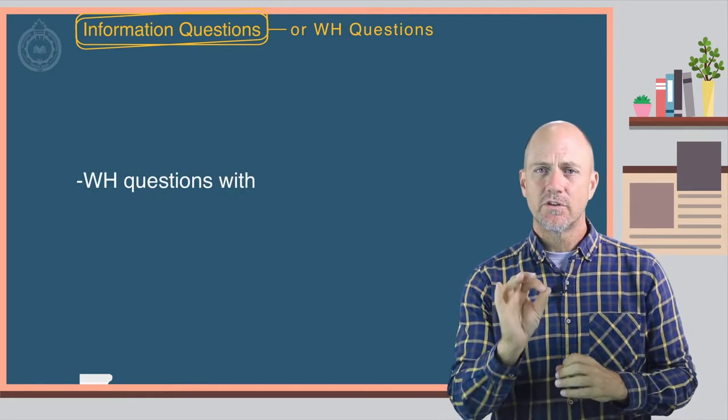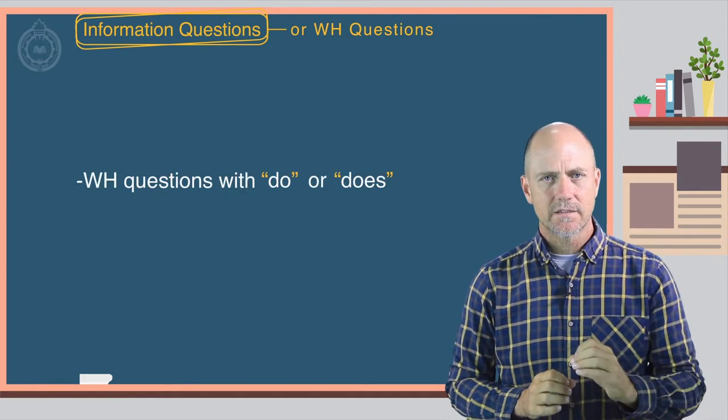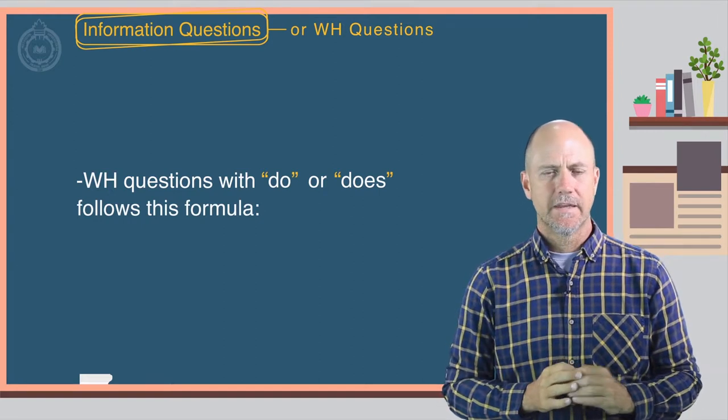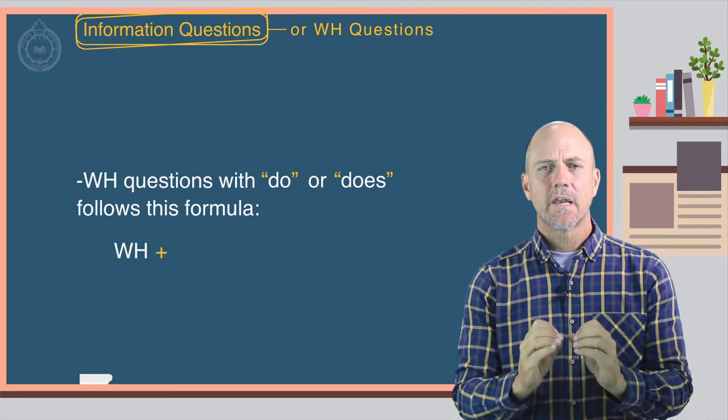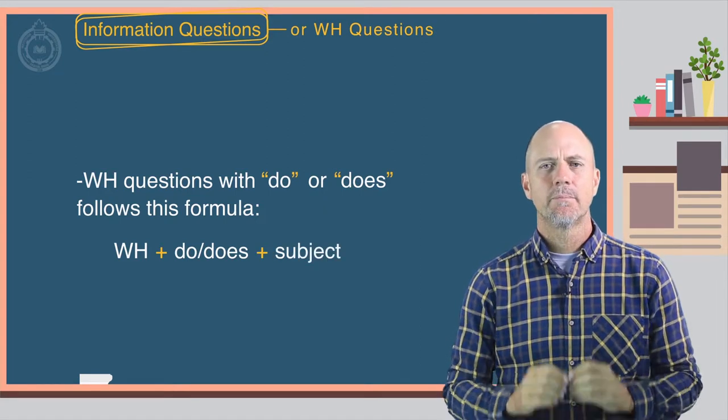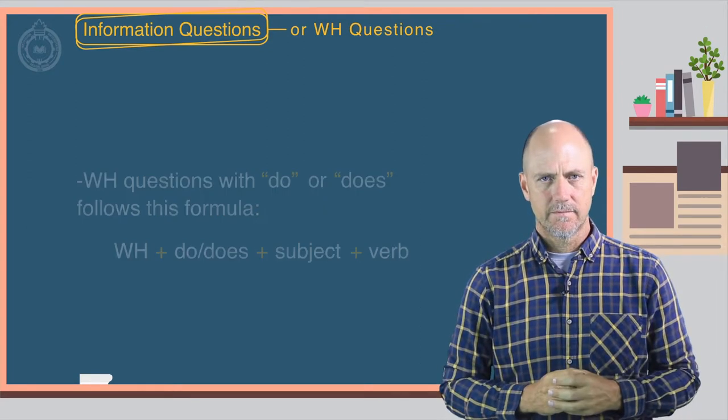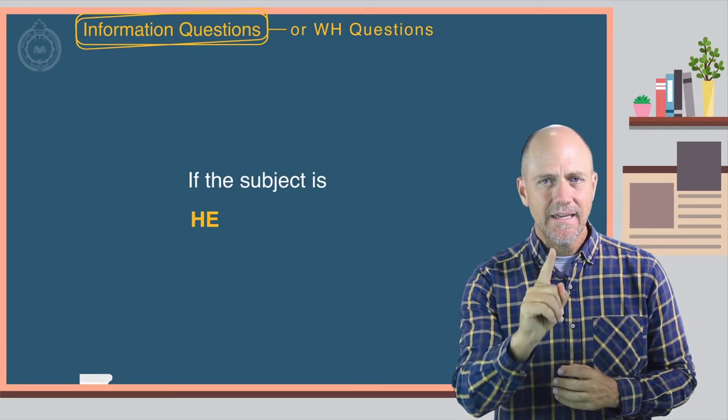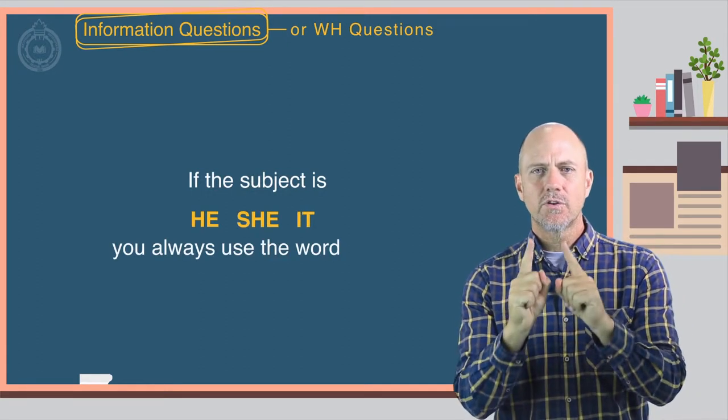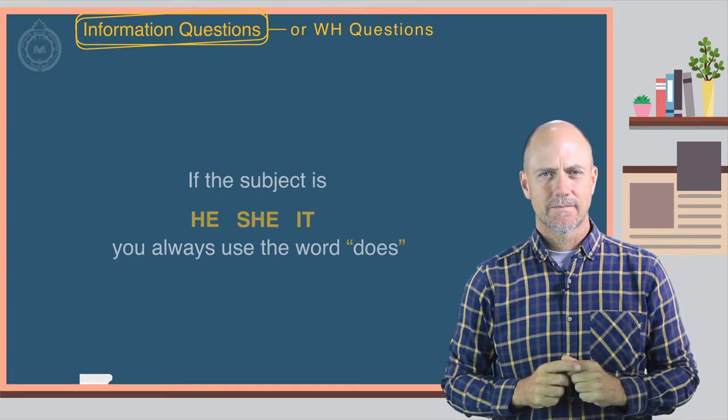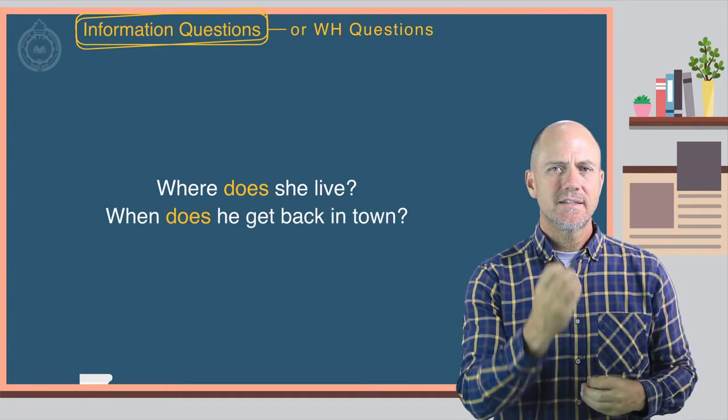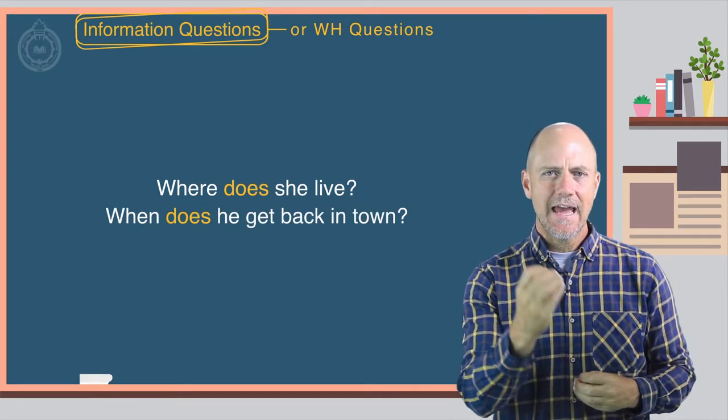WH questions with do or does follows this formula: WH plus do or does plus the subject plus the verb. If the subject is he, she, or it, you always use the word does. For example, where does she live? When does he get back in town?